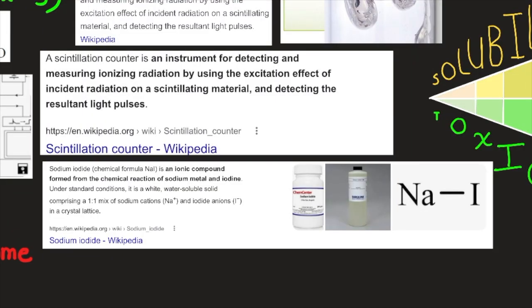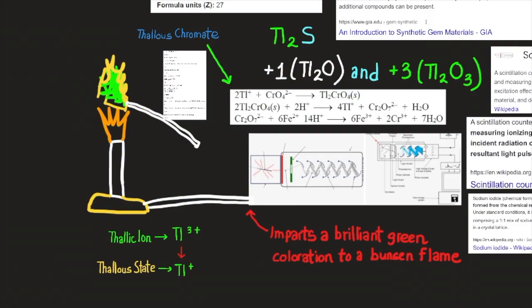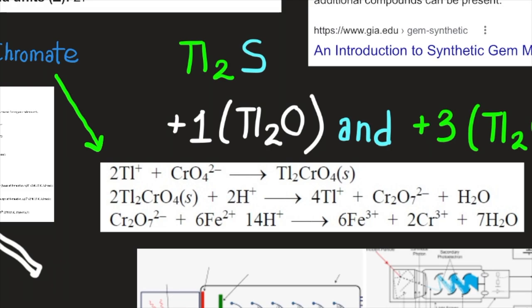Alkali halide crystals, such as sodium iodide, have been doped or activated by thallium compounds to produce inorganic phosphors for use in scintillation counters to detect radiation. Thallium imparts a brilliant green coloration to a Bunsen flame.